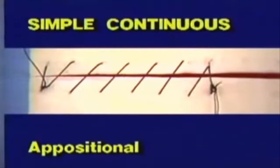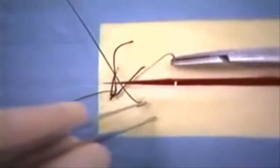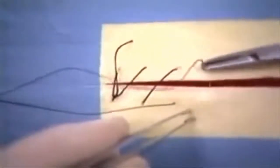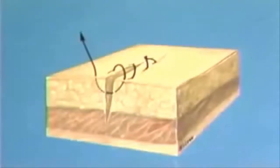The third pattern to be demonstrated is the simple continuous suture. This is an appositional suture pattern. The simple continuous suture is made by first creating a simple interrupted suture and knotting. Only the short or non-needle end is cut short. The needle is advanced and introduced through the tissue perpendicular to the incision line. No tying is done as the suture is again advanced and reintroduced in the same way. At the end of the incision, the suture is knotted securely. This illustration shows a completed simple continuous suture.